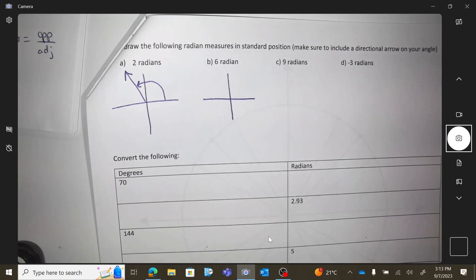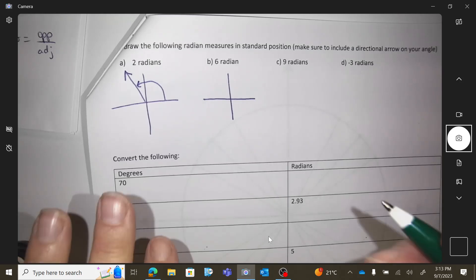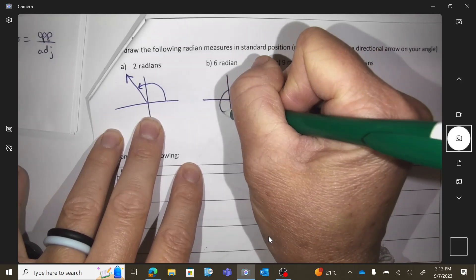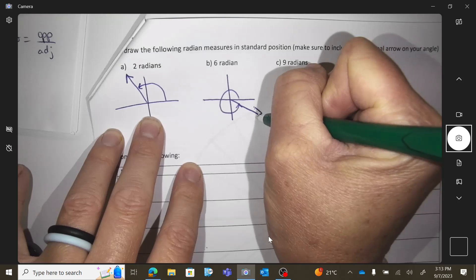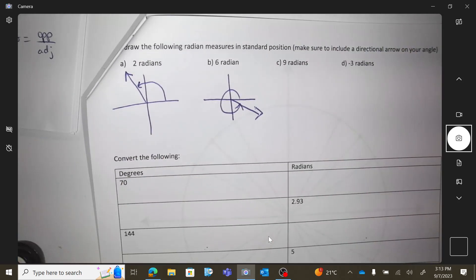So 6 radians, how am I going to process that? I'm going to always know a full circle is 6.28. So 6 radians would make me travel almost a full circle. So I need to be in quadrant 4.